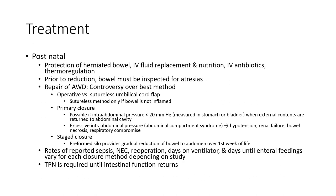Primary closure is possible if intra-abdominal pressure is less than 20 mmHg when external contents are returned to the abdominal cavity. Excessive intra-abdominal pressure can lead to hypotension, renal failure, bowel necrosis, and respiratory compromise. For staged closure, a preformed silo provides gradual reduction of bowel to the abdomen over the first week of life. Reported outcomes include rates of sepsis, re-operation, days on ventilator, and days until full enteral feeding, which vary by closure method. Total parenteral nutrition is required until intestinal function returns.